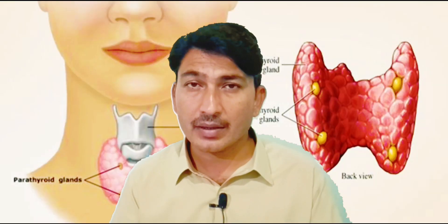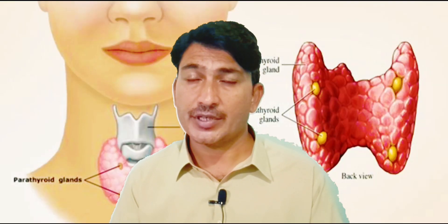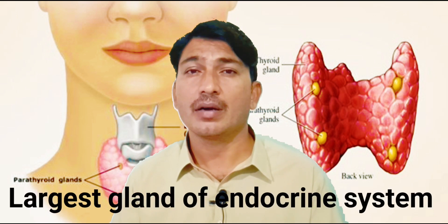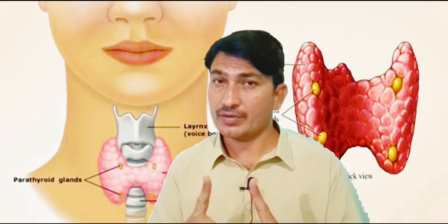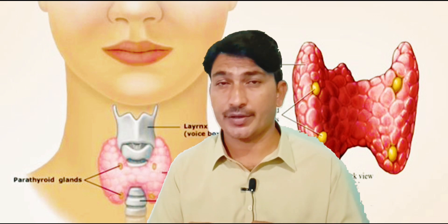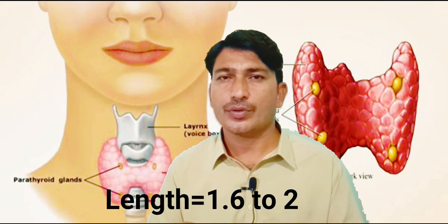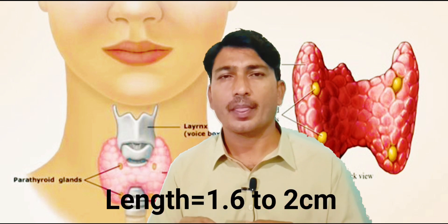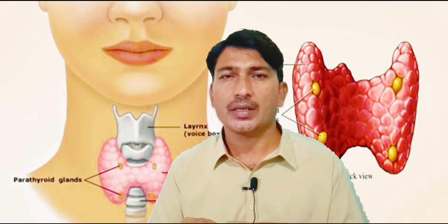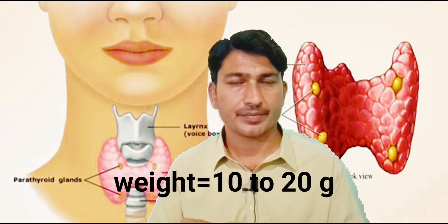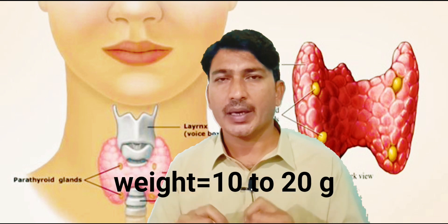Thyroid gland is the second gland we study after the pituitary gland, but it is the largest gland of our endocrine system. The smallest one is the pituitary gland. Note that point. Thyroid gland is approximately 1.6 to 2 centimeters, and its weight is 10 to 20 grams in an adult human being. Thyroid gland is a bi-lobed gland.